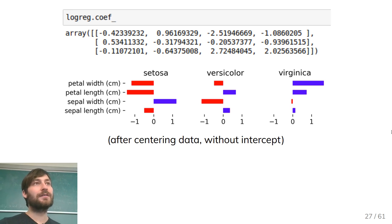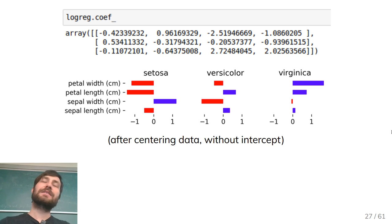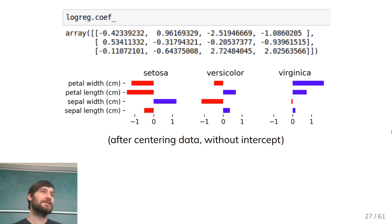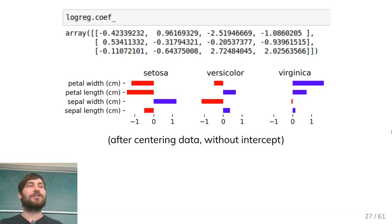Question: for SVC, the default for multiclass is one versus one classification? Yes, SVC always uses one versus one for multiclass. If you have lots of classes, SVC can be very slow, but each model is fitted on a subset of the data. With 100 balanced classes, each classifier is only trained on two hundredths of the dataset. There are things in scikit-learn called one versus one classifier and one versus rest classifier — you can wrap SVC in those and use one versus rest if you want.